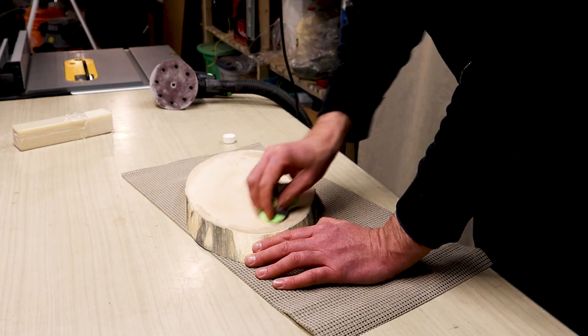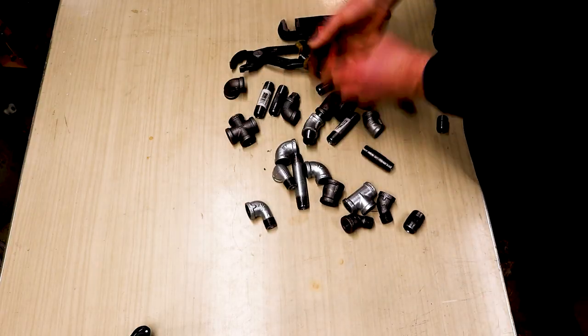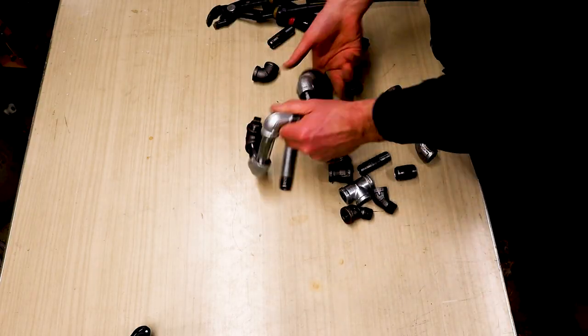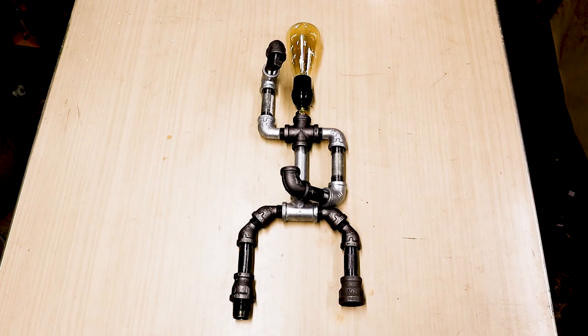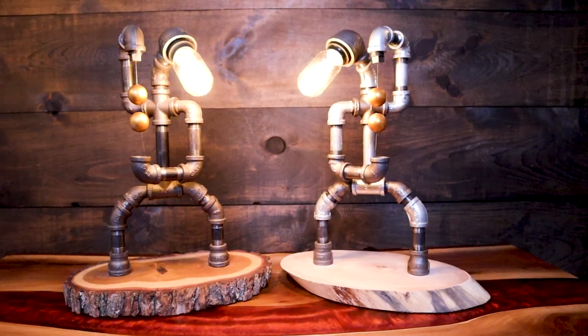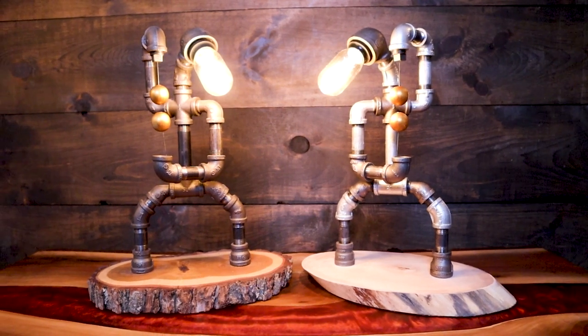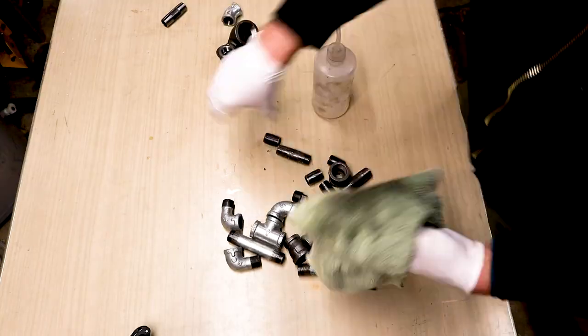With my pipe lamps, I always like to do a dry run without any wiring just so I can get a feel of how it's going to look before I commit to the build. I experimented with a few different designs for the head, but in the end I decided to do a mirror image of my first robot lamp.